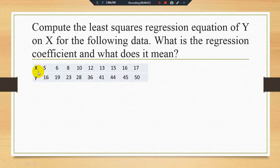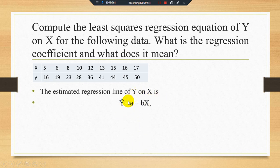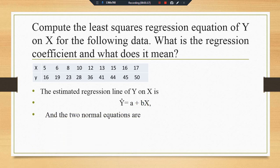We have data of variable x and variable y, and the estimated regression line of y on x is y-hat equals a plus bx. Here the dependent variable is y, the independent variable is x, a and b are parameters — a is called the constant or intercept and b is the slope. From the last video, there are two normal equations: summation y equals na plus b·summation x, and summation xy equals a·summation x plus b·summation x².